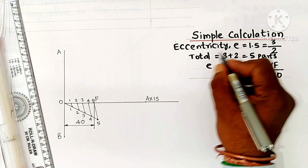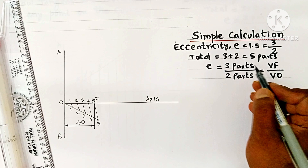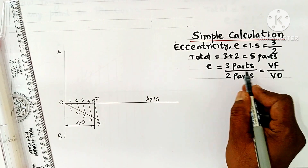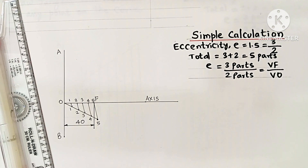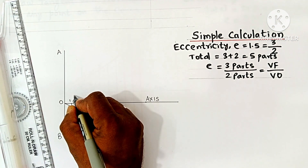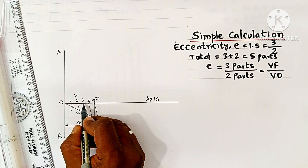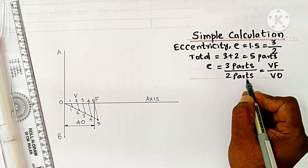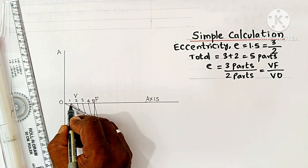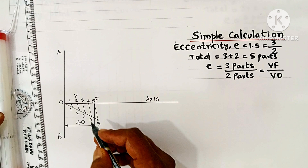From the simple calculation, VF in the numerator corresponds to 3 parts and VO in the denominator corresponds to 2 parts. Mark V, the vertex, at point 2, so that counting from V to F gives 3 parts (2 to 3, 3 to 4, 4 to 5) and VO gives 2 parts (0 to 1, 1 to 2). Mark point V based on the eccentricity value given in the question.